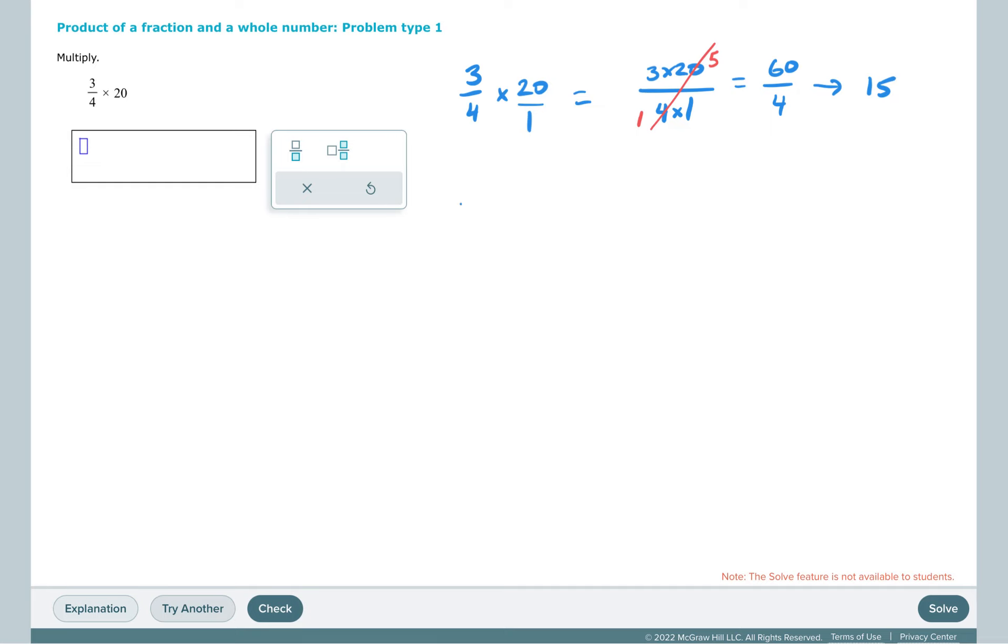Another way of looking at this problem is we can think of it as 3 fourths of 20, and then we can ask ourselves, what's 1 fourth of 20? 1 fourth of 20 is 5, so if 1 fourth is 5, 3 fourths is going to be 3 times that. So 3 fourths is going to be 5 times 3, which is 15.